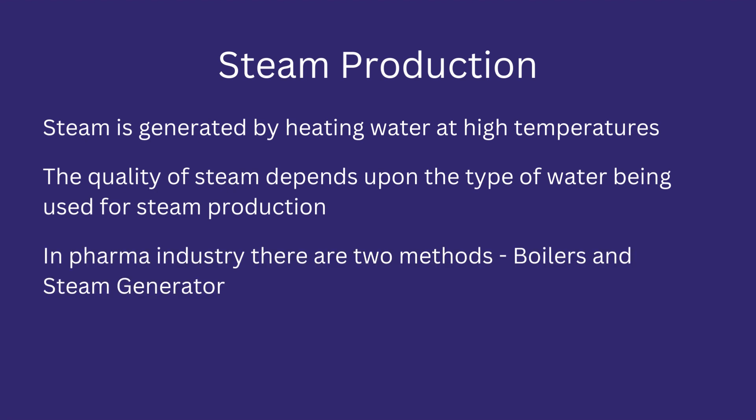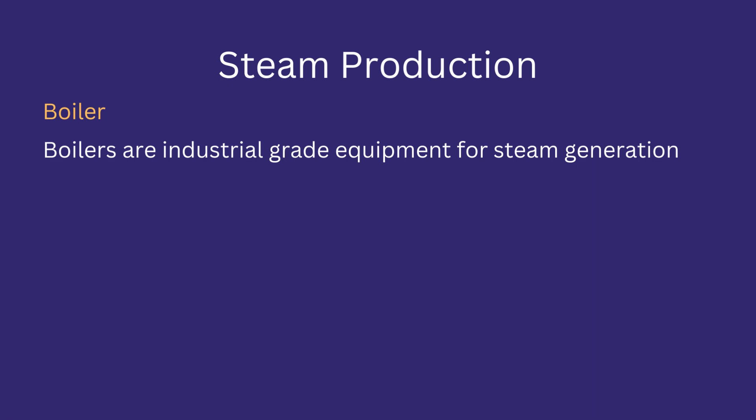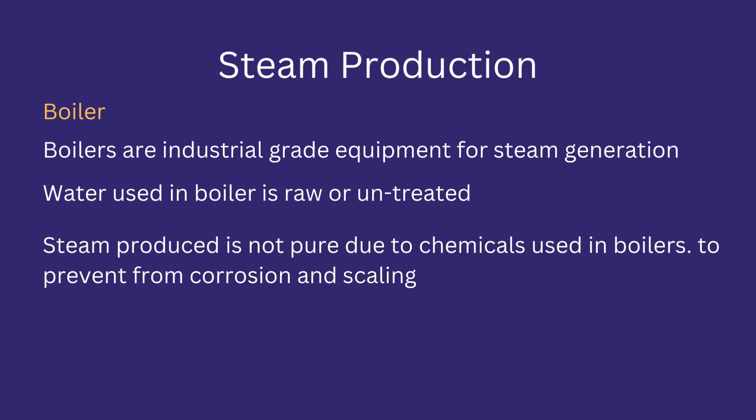In the pharma industry, there are two methods of generating steam: boilers and steam generators. Boilers are industrial-grade equipment used to generate steam, and their internal structure allows for easy heat transfer to convert water into steam. The feed water used in the boiler is untreated or raw and is not pure. In addition to impurities, the feed water also contains chemicals as part of equipment requirements — these chemicals are used to increase the life of internal parts and mechanical structure and to prevent corrosion and scaling.